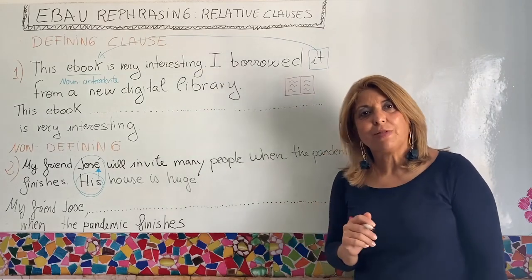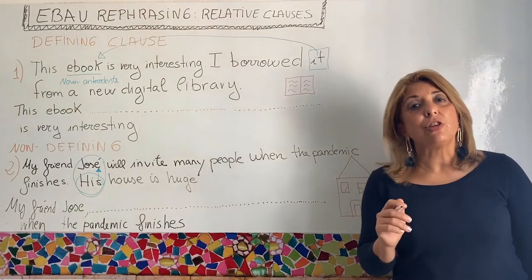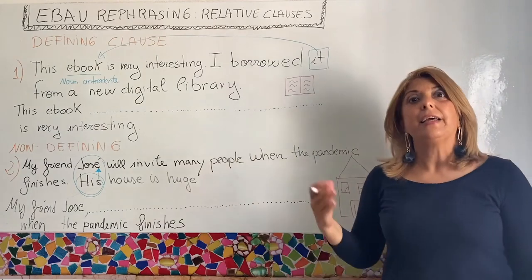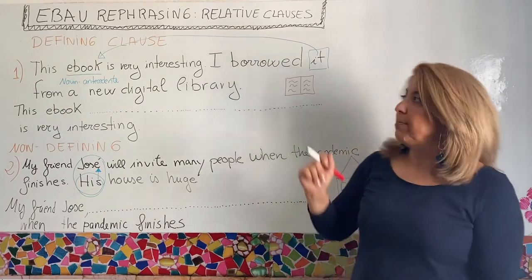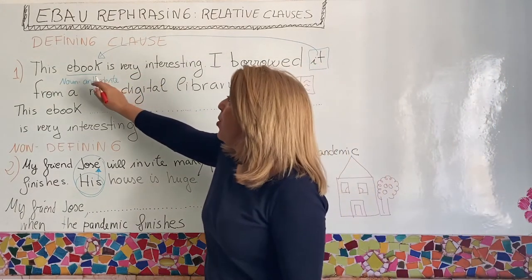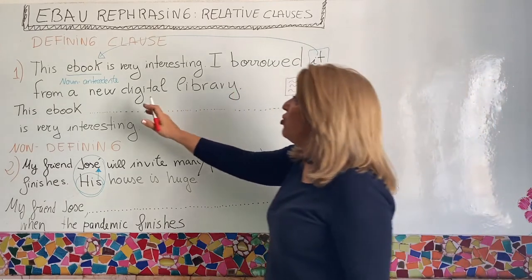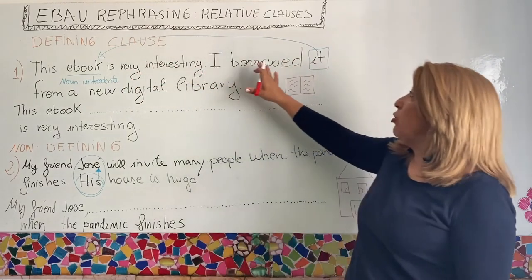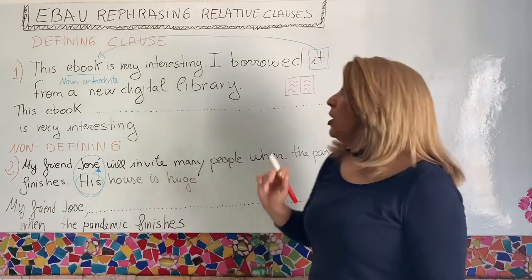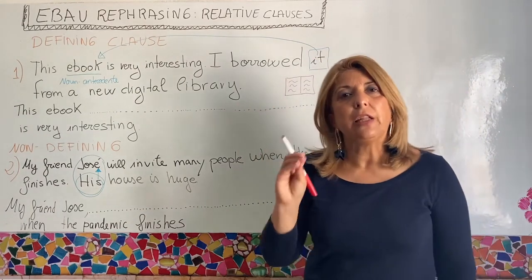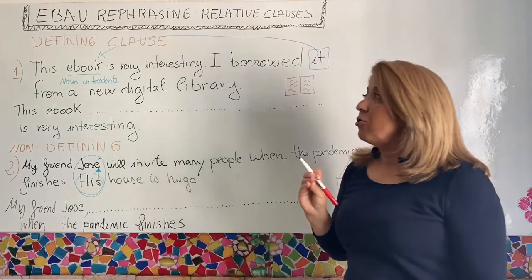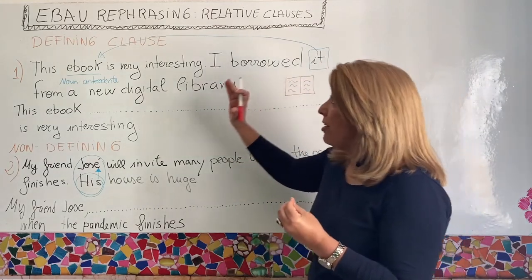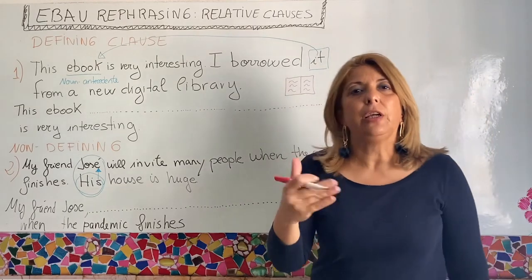Now let's go to the blackboard to work through two examples — one defining and one non-defining clause. The first example is: 'This book is very interesting.' and 'I borrowed it from a new digital library.' We need to join these into one sentence using a defining relative clause. It's defining because we don't know which book it is until the relative clause specifies that I borrowed it from a digital library. 'This book' is the antecedent.